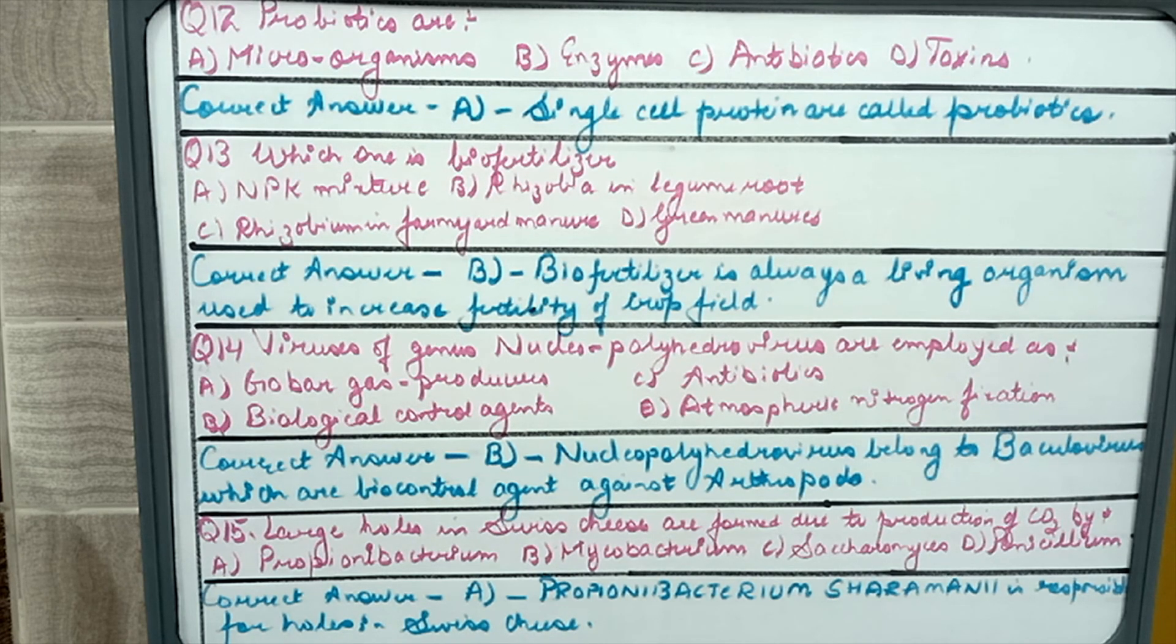Question 13: which one is biofertilizer? NPK mixture, Rhizobium in legume roots, Rhizobium in farmyard manure, or green manure. NCERT says biofertilizer is always a living organism which increases the fertility of crop field. So a living organism is Rhizobium in leguminous roots. Answer would be option B.